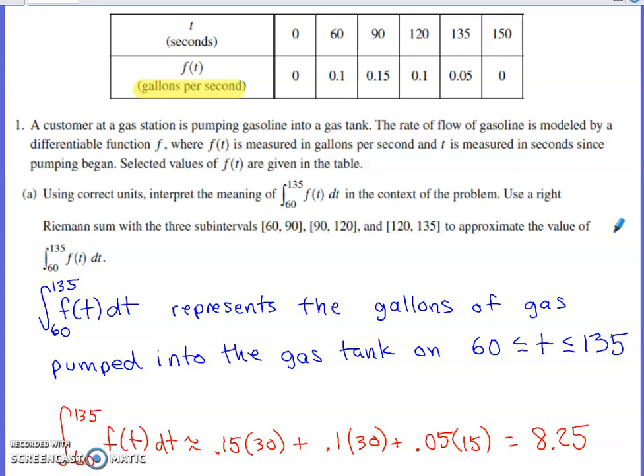And the context that we're dealing with involves a customer at a gas station pumping gas into a tank. The rate of flow of gas is modeled by the differentiable function f. f(t) has units of gallons per second. t is being measured in seconds since the pumping began. Selected values of f(t) are given in the table above.